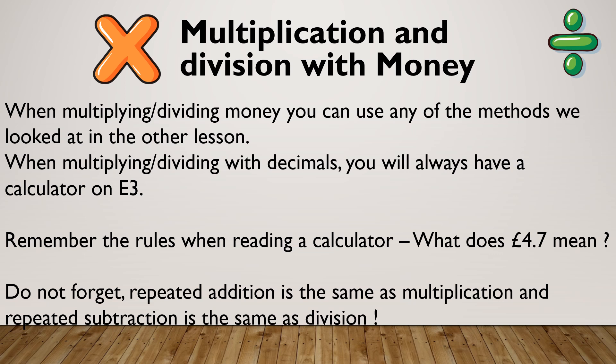If it's whole numbers it could be on non-calculator, but if it's money — pounds and pence — it will be on a calculator paper at entry three. Don't forget, when you're reading a calculator, 4.7 means £4.70. I would lose a mark if I left it in that format; I need to remember to write £4.70.